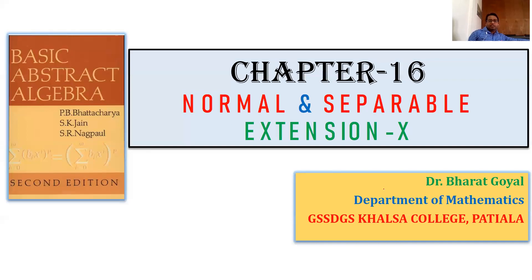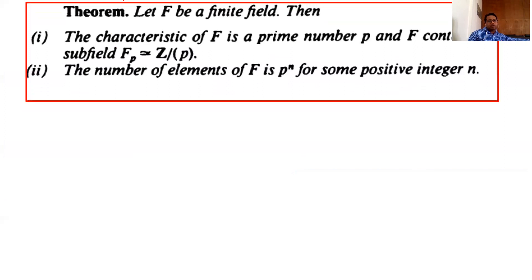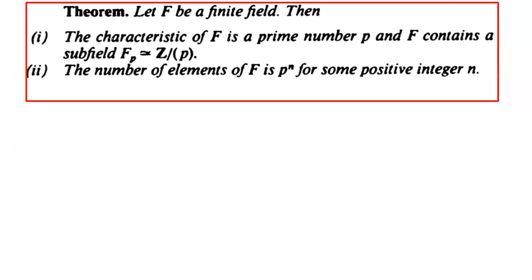In this topic on normal and separable extensions, we discuss finite fields. The next theorem states: let F be a finite field. Then we have to prove that the characteristic of F is a prime number p, and F contains a subfield fp.